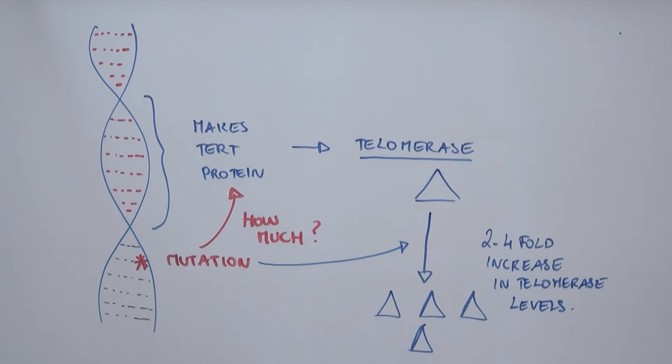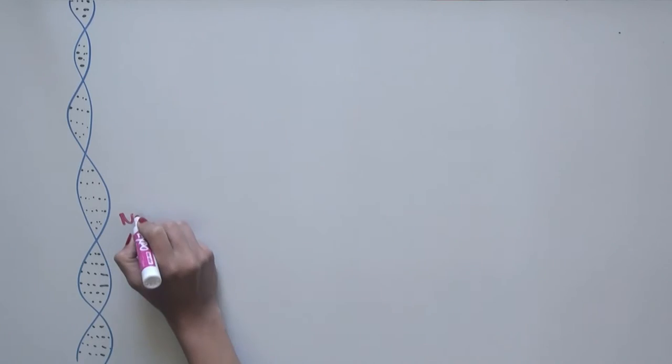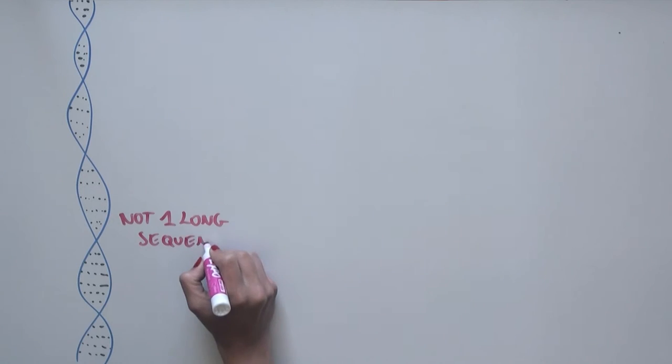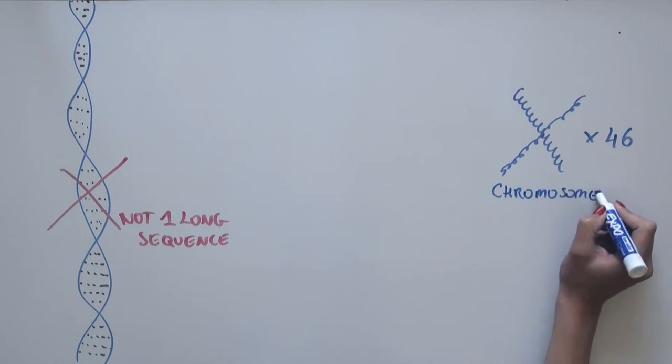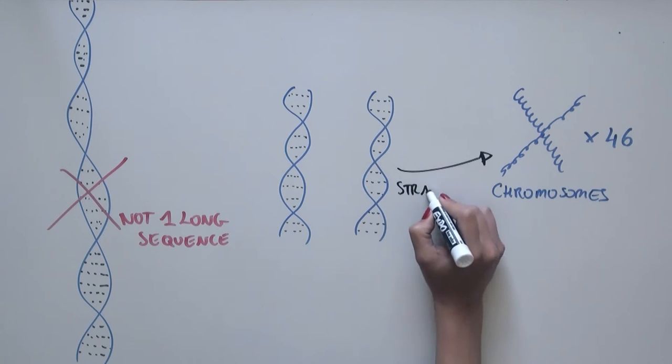To understand what telomerase is, and what happens when you have more telomerase, let's step back a little bit and go back to the DNA. DNA is not one long sequence. Instead, DNA is organized in 46 chromosomes, which consist of different strands of DNA twisted on themselves.